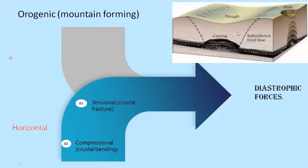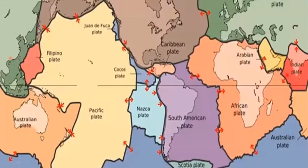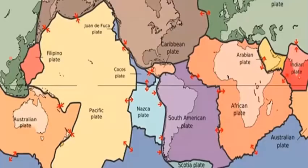Orogenic movements have to do with the various tectonic plates. When the various plates converge, that is characterized by folding, faulting, or magma and volcanism. These are the various orogenic movements.